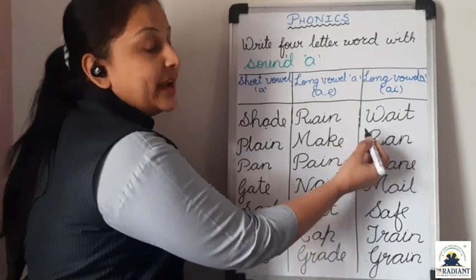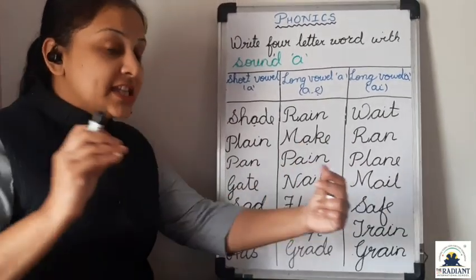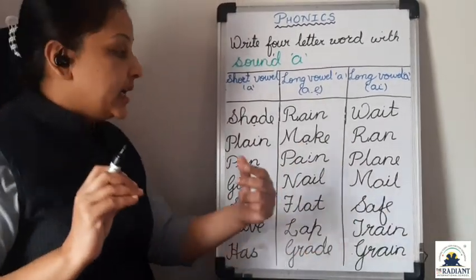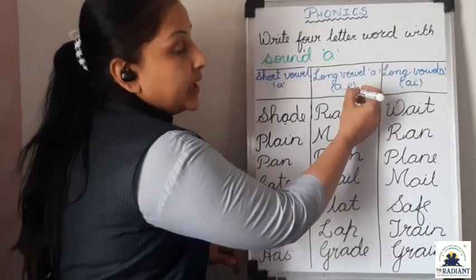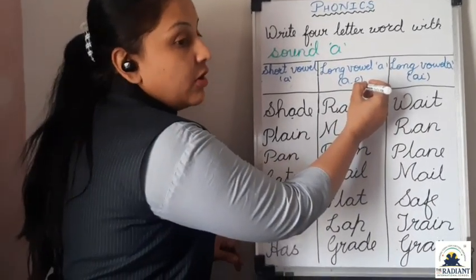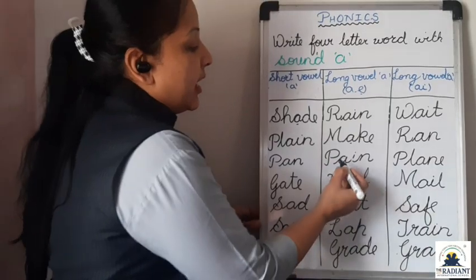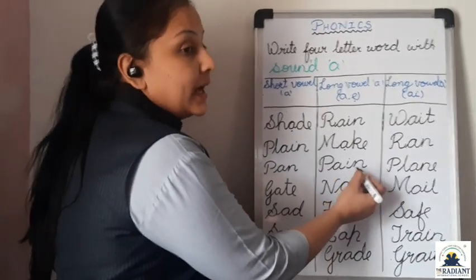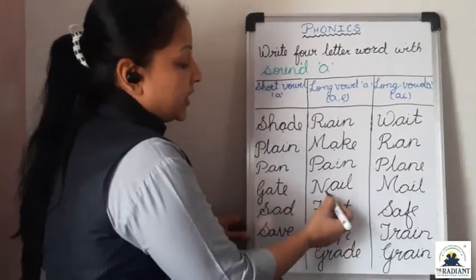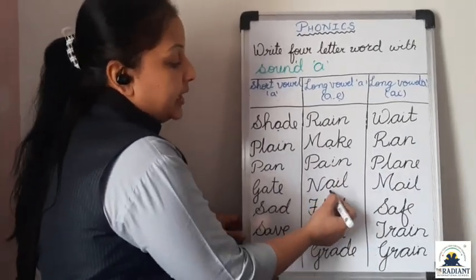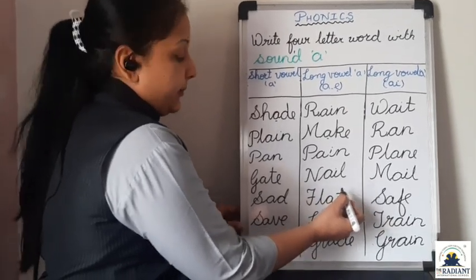Make. Means we have to stretch the sound of A with the help of E — take the sound of E and stretch it. P, A, I, N — Pain. N, A, I, L — Nail.